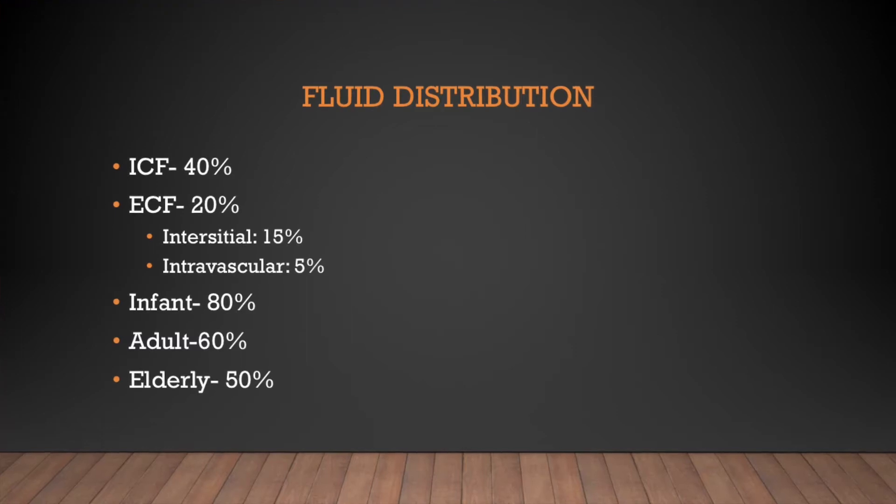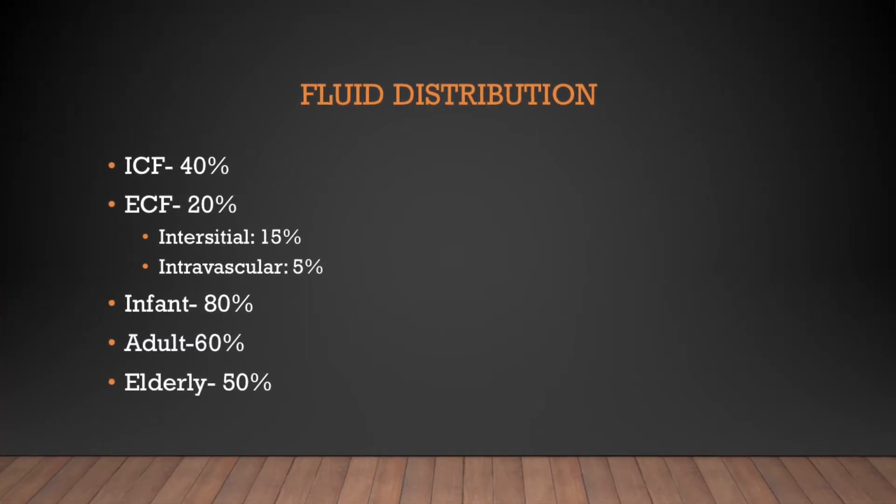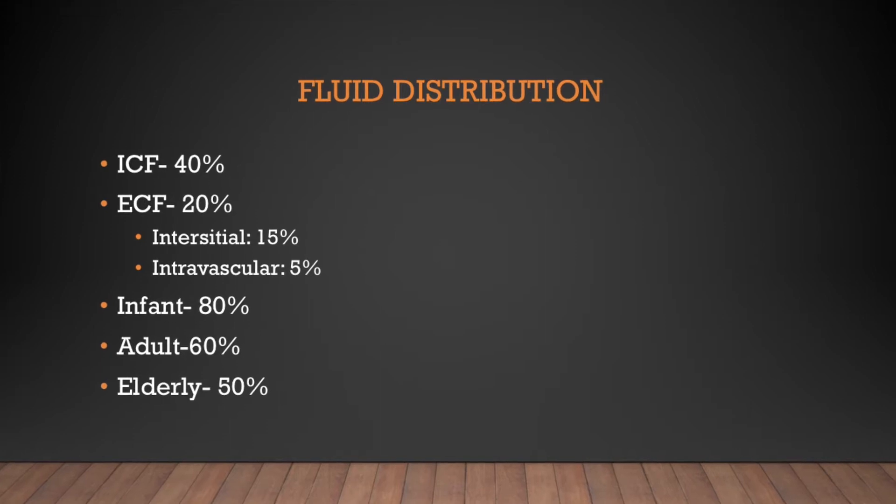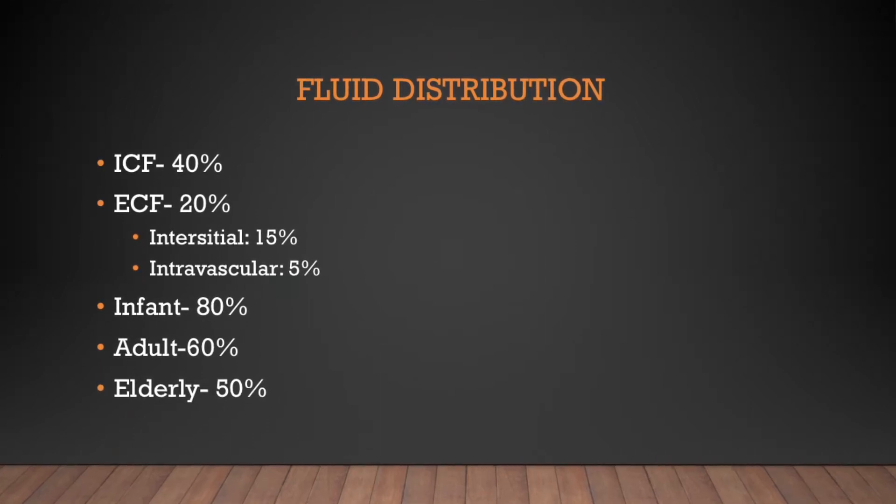First, fluid distribution. Intracellular fluid makes up about 40% of the body in total. Extracellular fluid makes up 20% of the body — 15% is interstitial and 5% is intravascular.